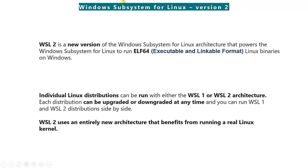WSL2 is the new version of WSL which supports the Executable and Linkable Format 64-bit (ELF64) binaries. Individual Linux distributions can run on either WSL1 or WSL2, and we can switch back and forth between WSL version 1 and 2. You can also run them side by side.